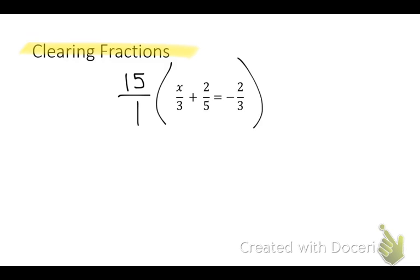We're going to cross reduce the 3 and the 15. What is the 15 reduced to? 5. Multiply that by the numerator. 5 times x is 5x. Now you're done with your 5. Cross reduce the 5 and the 15. What is it reduced to? 3. 3 times 2 is 6. You're done with your 3. Cross reduce the 3 and the 15 again. What is it reduced to? 5. 5 times negative 2 is negative 10.